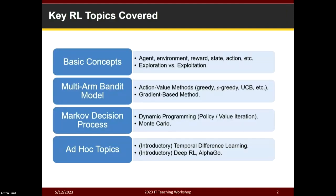I want to show you the key topics I cover in reinforcement learning and justify what I put in and what I choose to leave out. We start with basic concepts — the basic terminologies people use: agent, environment, reward, state, action. This is important because students come to this class without any prior knowledge of reinforcement learning, and the language here is quite different from supervised or unsupervised machine learning. This is specifically about making decisions and taking actions, not making predictions or discovering patterns.